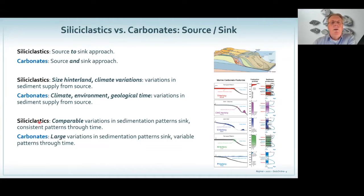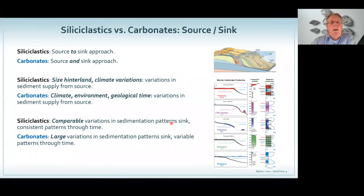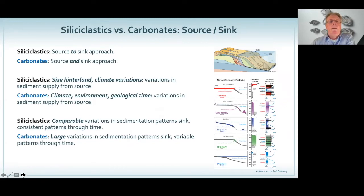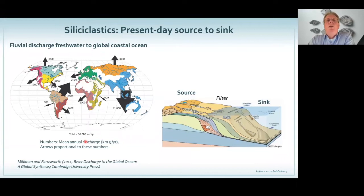When I look at variations in sedimentation patterns from source to sink in siliciclastics, these patterns are more or less the same because the principle of erosion and transport through rivers is consistent through time. But when I go to carbonates, I have large variations, because when I go back to the Precambrian, the Cretaceous, or the present day, the carbonates vary and therefore sedimentation patterns vary. That's why comparing clastics and carbonates means entering two different worlds.